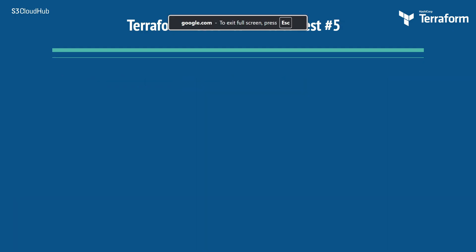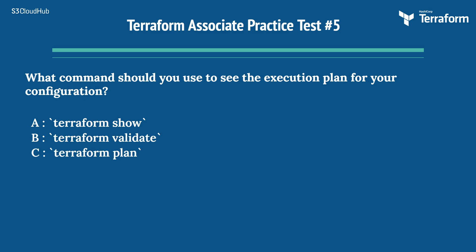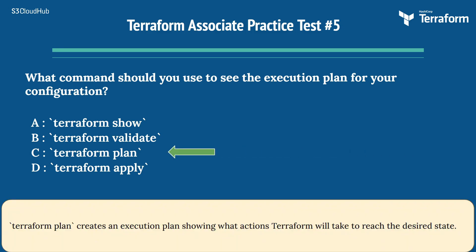Question 5: What command should you use to see the execution plan for your configuration? Options: A) terraform show, B) terraform validate, C) terraform plan, D) terraform apply. The right answer is C) terraform plan. Terraform plan creates an execution plan showing what actions Terraform will take to reach the desired state.